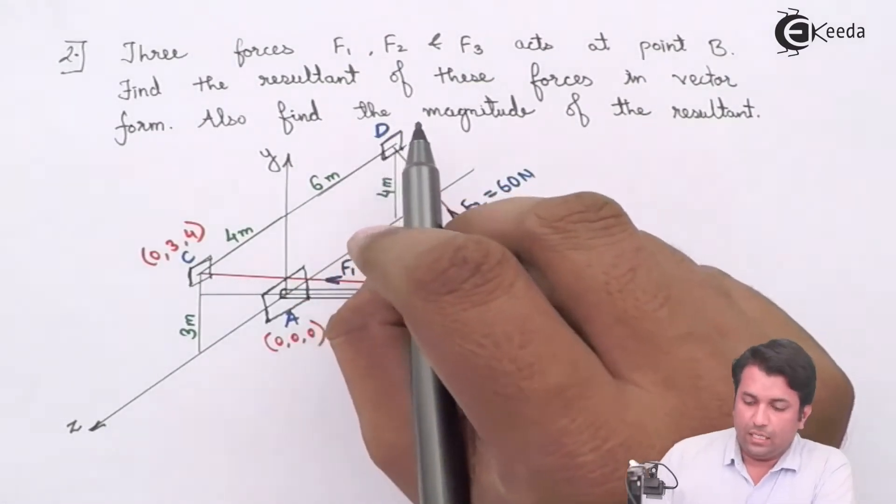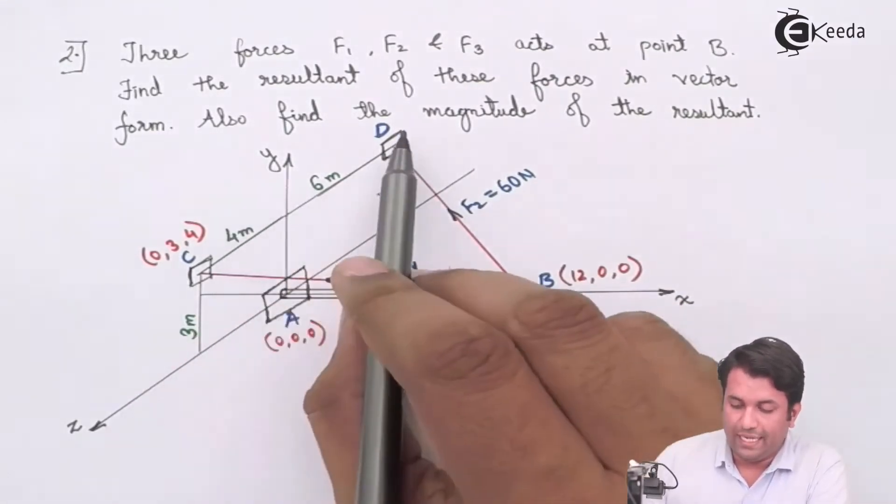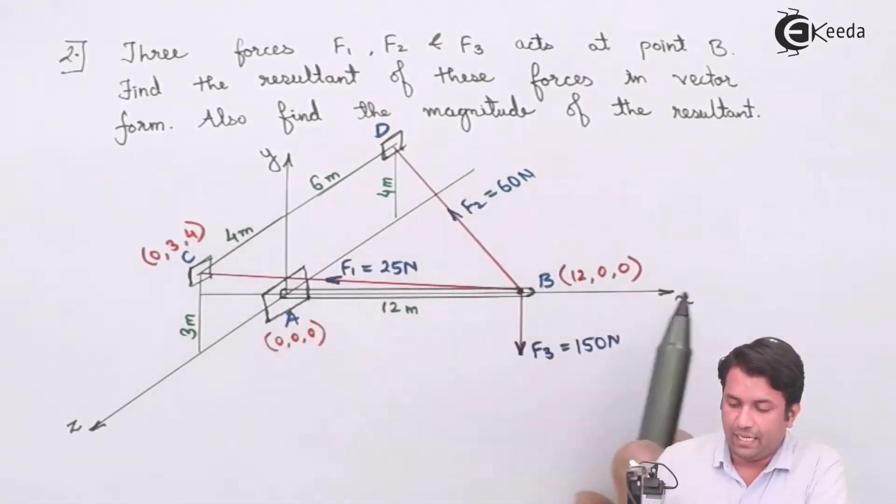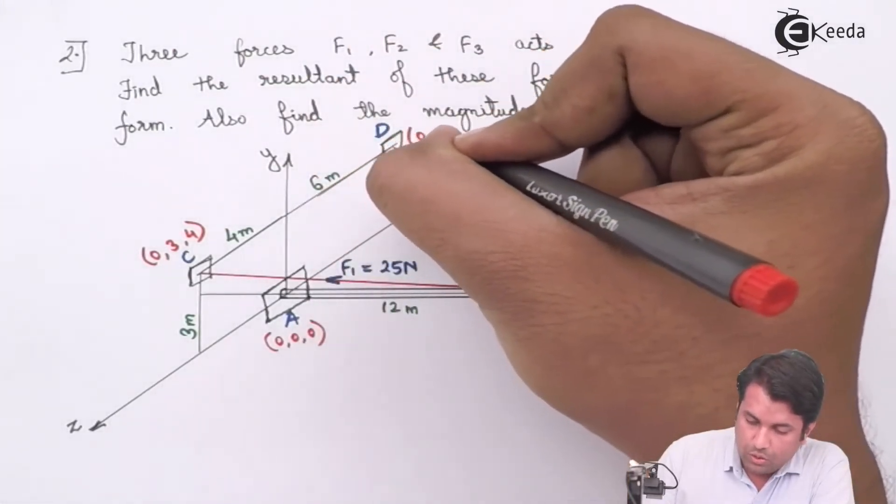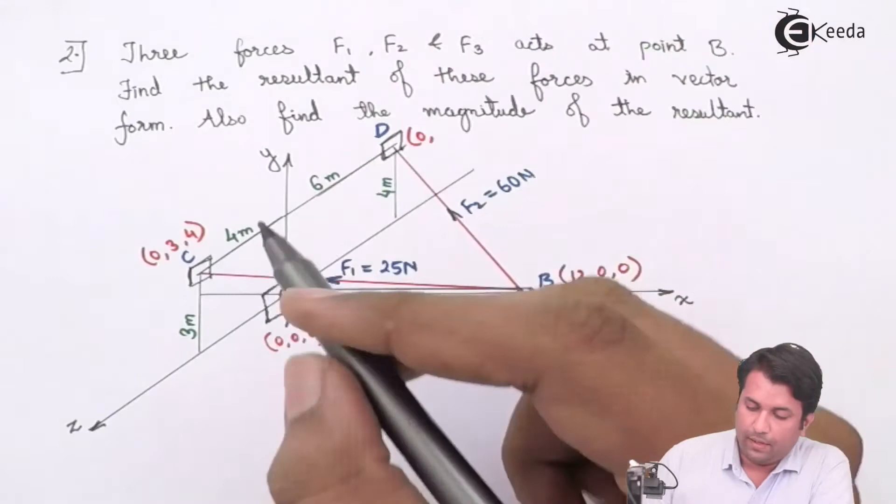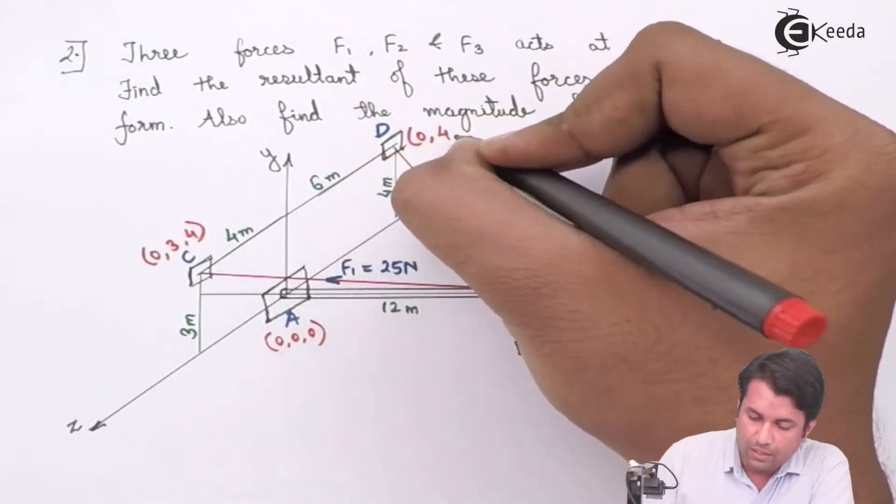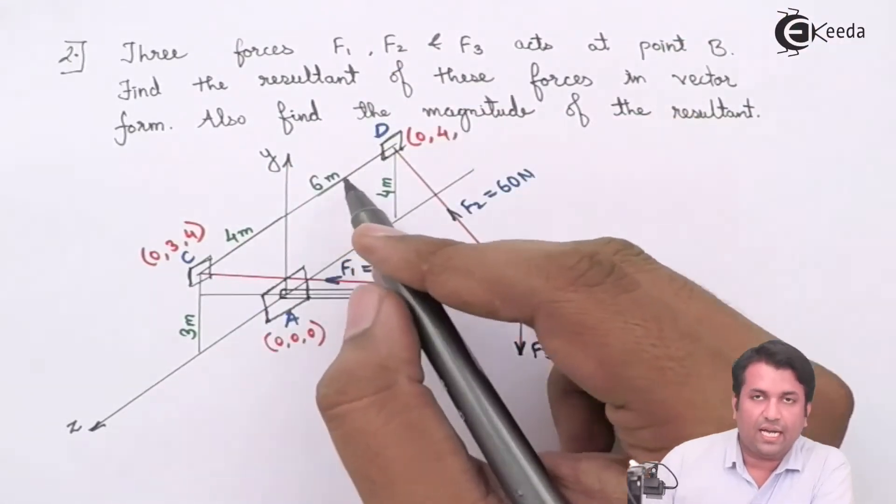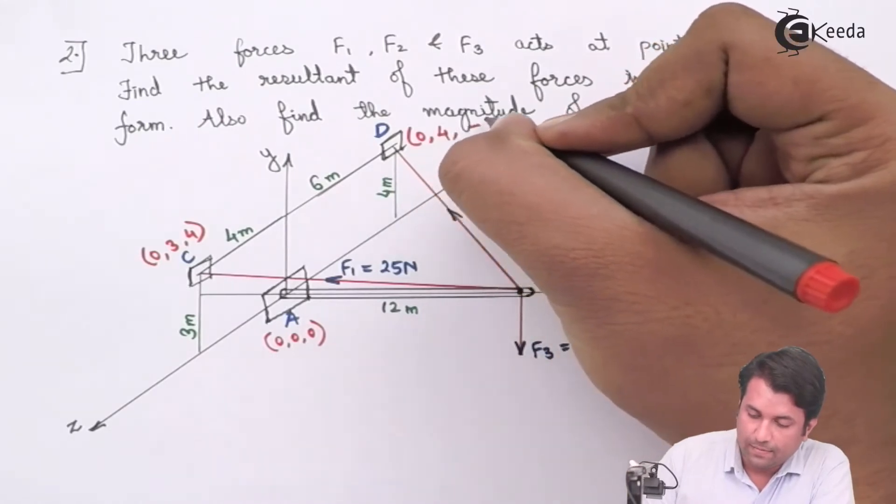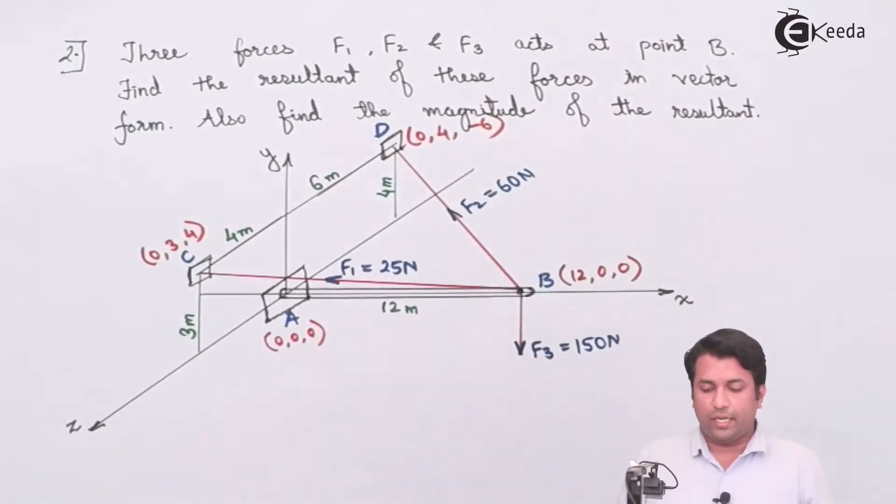The coordinate for point D is also in the YZ plane, so X will be 0. The Y distance is positive at 4 meters, whereas the Z distance is on the negative side at minus 6. So D is (0,4,-6). Now I have all the coordinates and can easily find the force vectors.